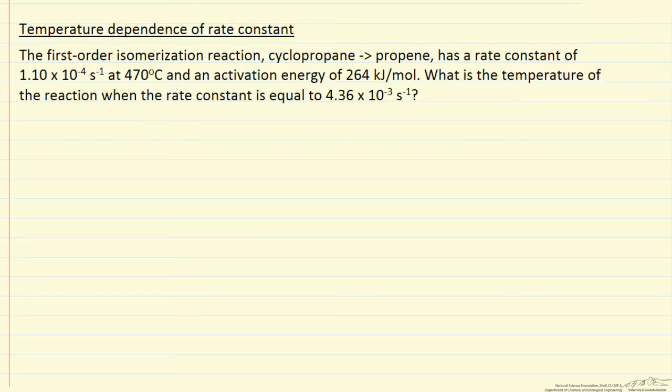Here we have a first order reaction and we're given the rate constant at 470 degrees C and the activation energy for the reaction. We want to know at what temperature does the rate constant equal 4.36 times 10 to the minus 3 seconds to the minus 1.